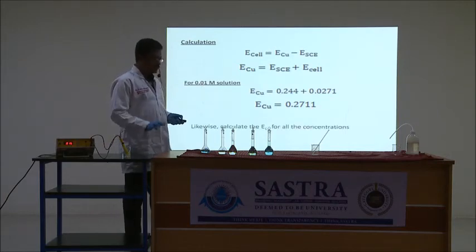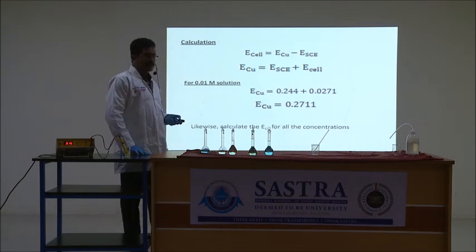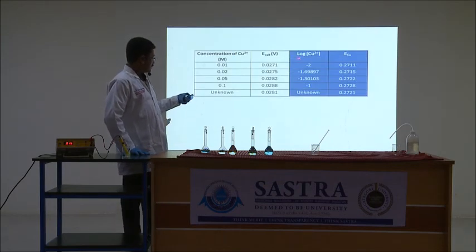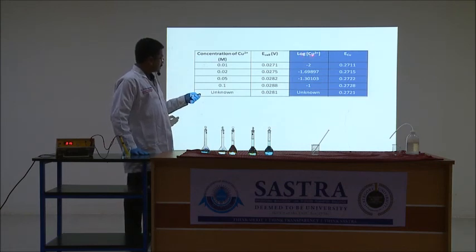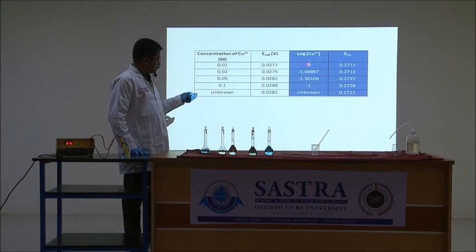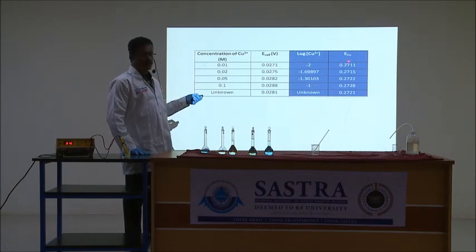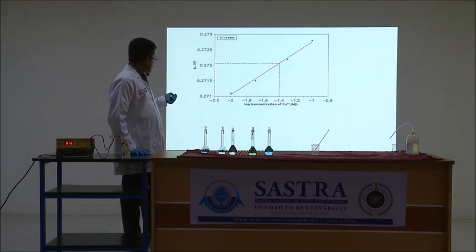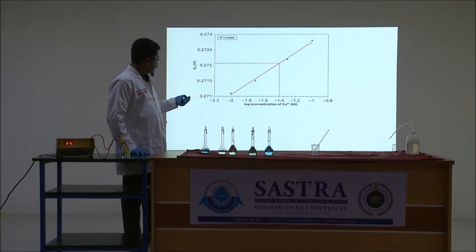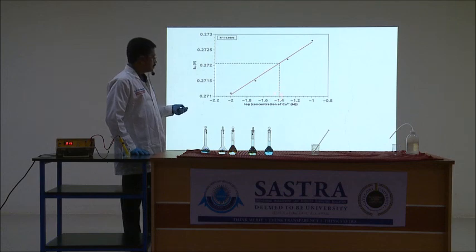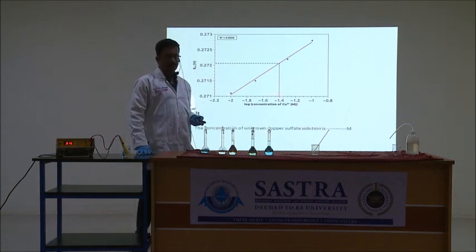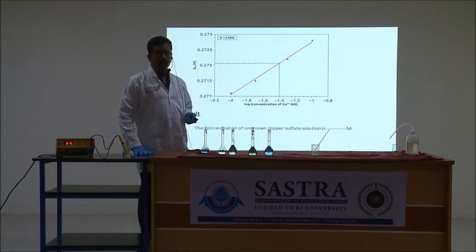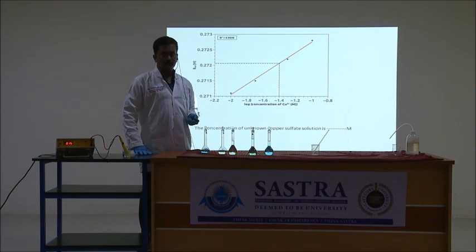Likewise, you measure for all the concentrations and find the single electrode potential of copper. You will get a table like this. Here, this is the log concentration of Cu²⁺ ions. You take it on the x-axis and single electrode potential of copper on the y-axis. You will get a graph like this — a straight line. This is the E-copper value of the unknown solution. Draw a horizontal straight line from it; it meets this graph at some point, then draw a vertical straight line down. If you find the antilog of this value, you will get the concentration of the unknown copper sulfate solution. Like this, the Nernst equation is used to find the concentration of an unknown copper sulfate solution. Thank you.